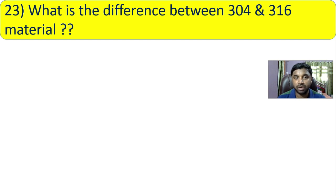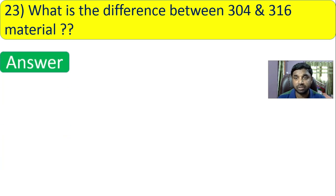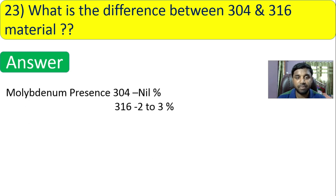Question 23: what is the difference between 304 and 316 material? The key difference is molybdenum content. In 304, molybdenum content is nil (zero). In 316, molybdenum content is 2 to 3 percent.